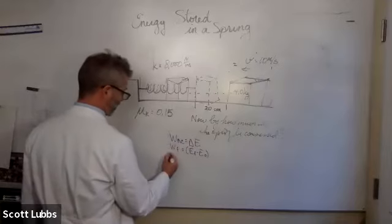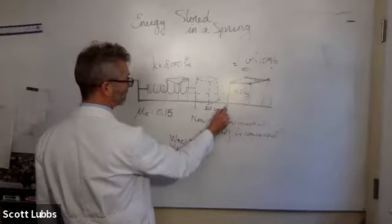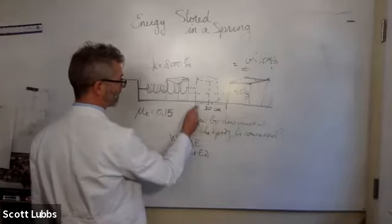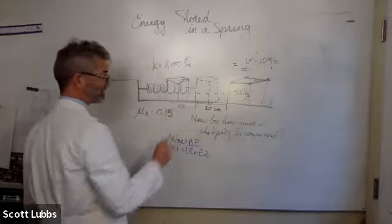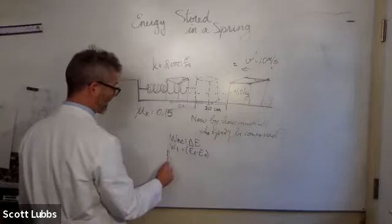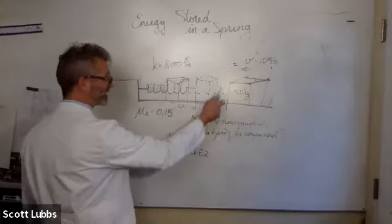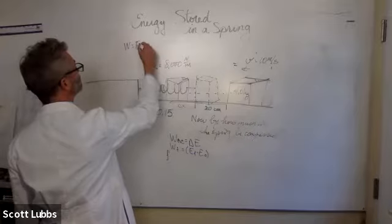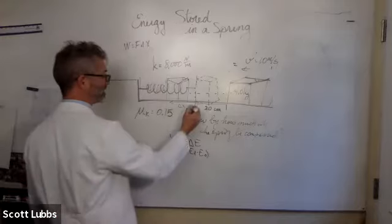Work done by friction is the force of friction. The force of friction is going to act over this. There's my force of friction. Force of friction is going to act over that 20 centimeters and then by whatever that delta x is. How long does the force of friction act? We have another delta, we have another delta x. Work is force delta x, but now we have multiple delta x's. You've got to keep them together.